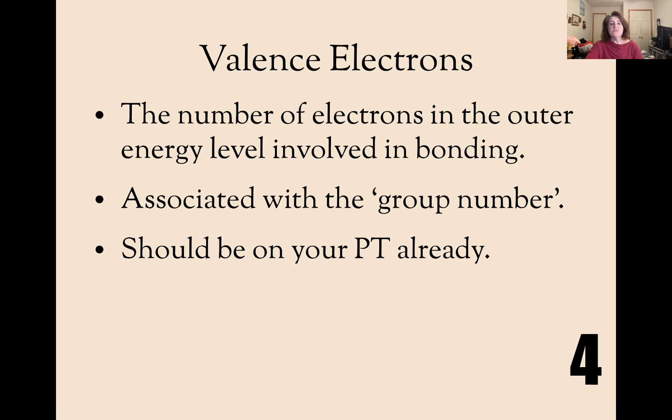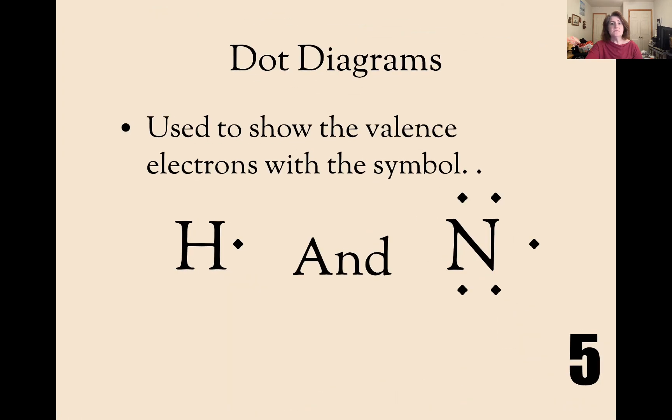The valence electrons are the number of electrons in the outer energy shell, but they're the ones involved in bonding. They're loosely associated with the group number and should already be on your periodic table. Dot diagrams show the valence electrons with the symbol.